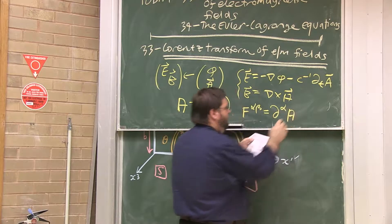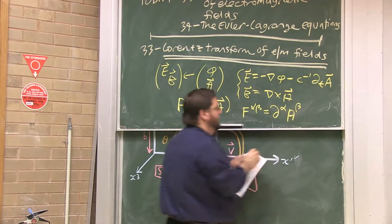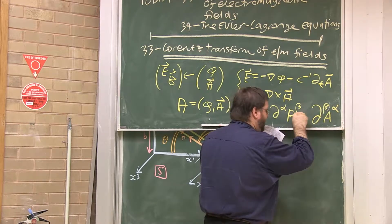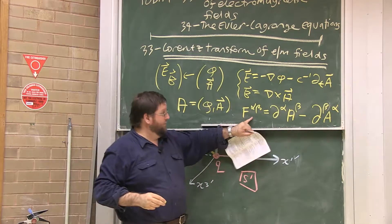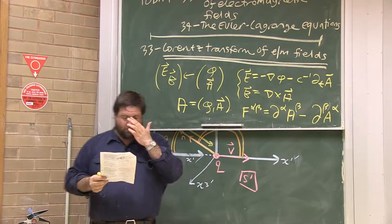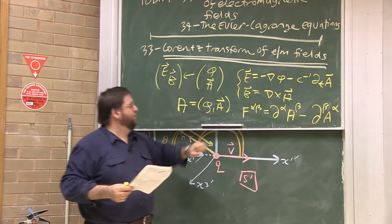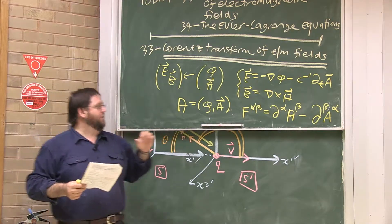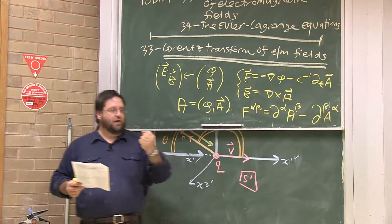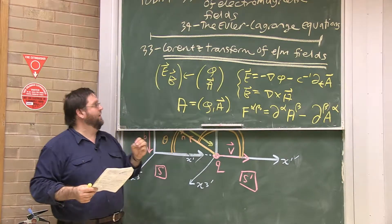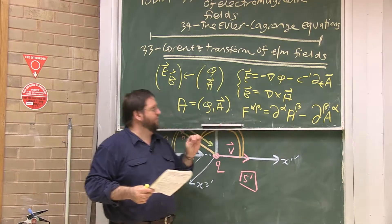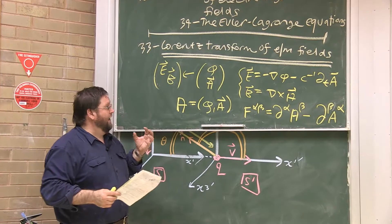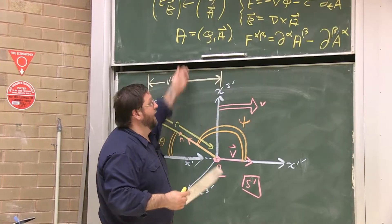In flat spacetime, the derivative of a tensor is a tensor. So the Faraday tensor — the tensor derivative of the four-potential — is a tensor. The difference of tensors are tensors. The Faraday tensor was a tensor when we saw that the Maxwell equations can be written in tensorial form. There are six independent components, which turned out to be the three Cartesian components of E and the three Cartesian components of B. The pieces of this tensor are made from the Cartesian components of electric and magnetic field.